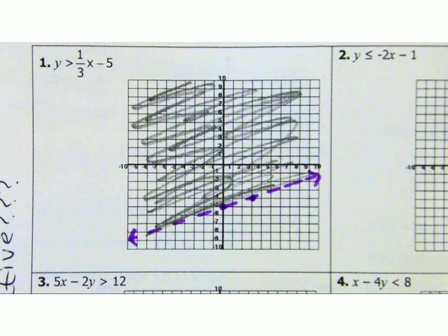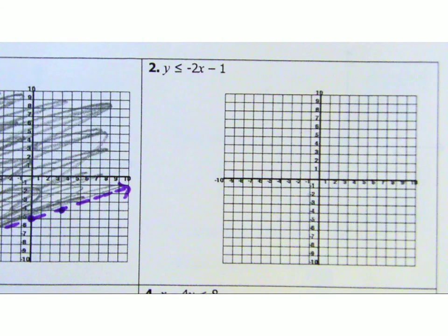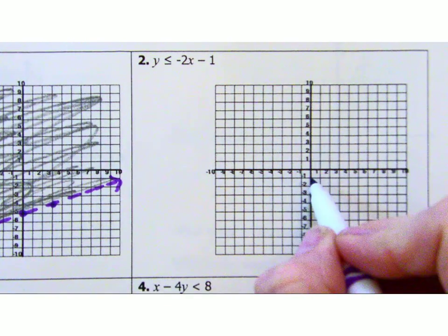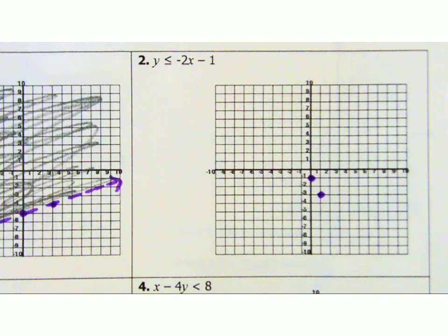Do number two. Try number two on your own and then we're going to... Number two. Try it. So for a lot of you, just remembering your slopes and how to graph a line might be tricky. So be careful. You have to know where your first two points are supposed to go.